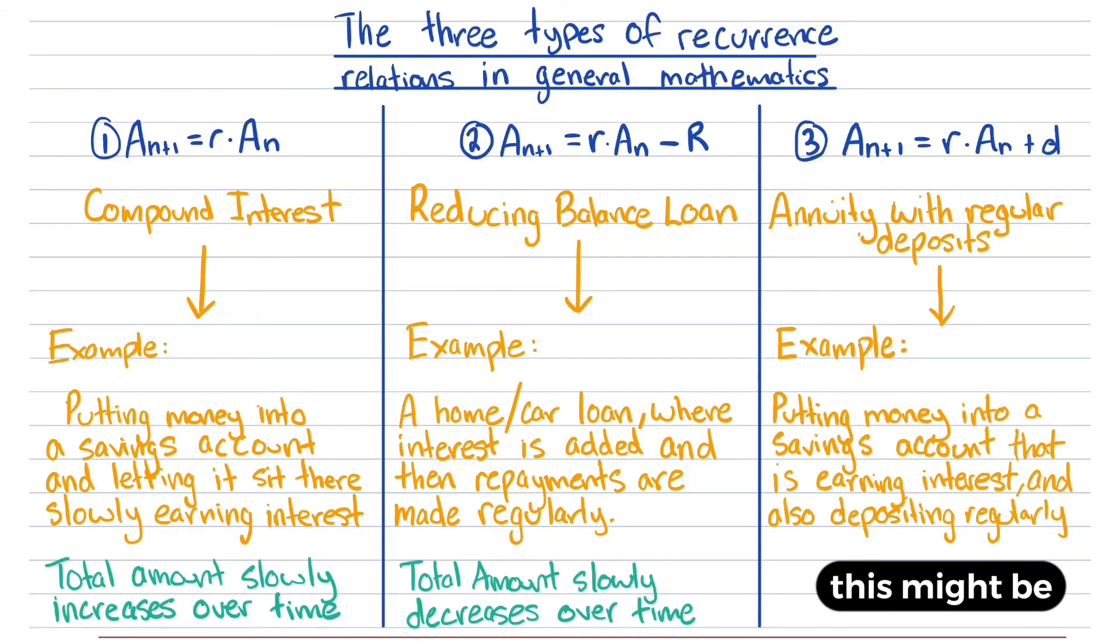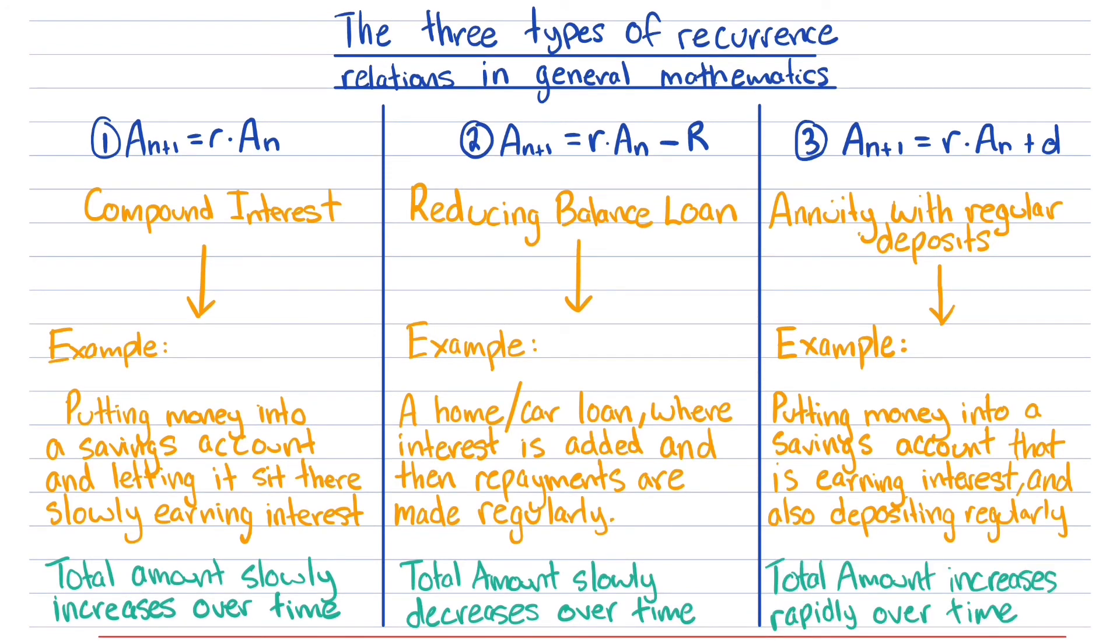An example might be putting money into a savings account that's already earning interest and then on top of that, depositing money regularly. This means the total amount will be increasing quite quickly over time.